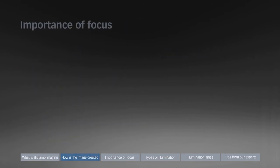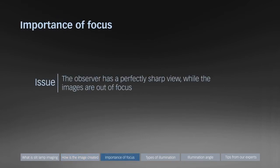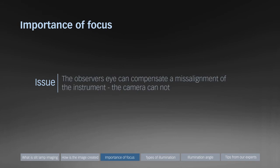This section is dedicated to the importance of focus. A common issue in slit lamp imaging is that the observer has a perfectly sharp view while the images are out of focus. This is because the observer's eye can compensate a misalignment of the instrument, but the camera cannot.